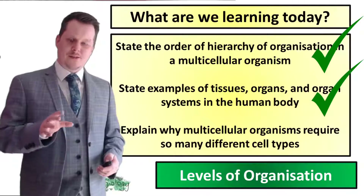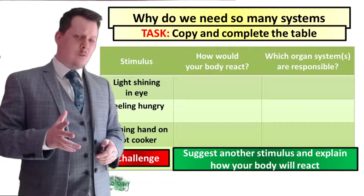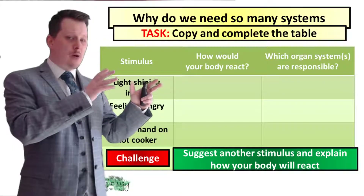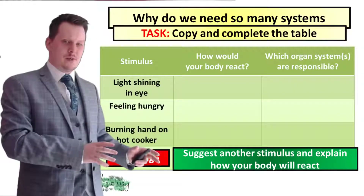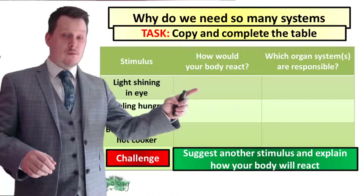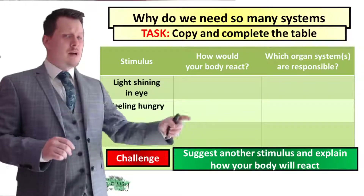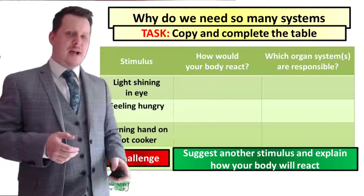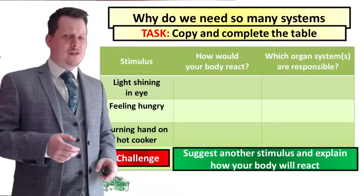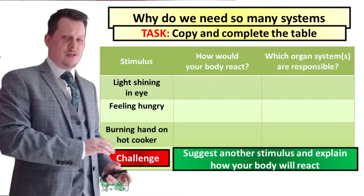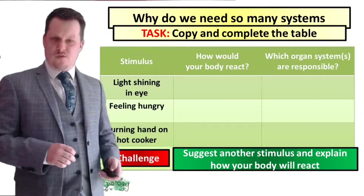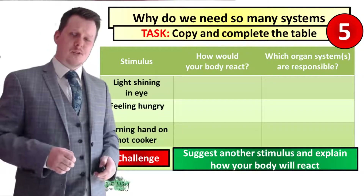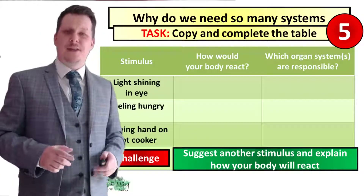What I'd like you to do is complete this table. It's got three headings: stimulus, which tells you the thing which is going to happen to the body; how your body would react; and what organ system or organ systems are responsible for that reaction. If you want a bit of a challenge, you can think of your own stimulus and explain how your body would react to that. I'm going to put five seconds on the clock. If you need a bit more time, pause the video and when you finish we'll go through it together.